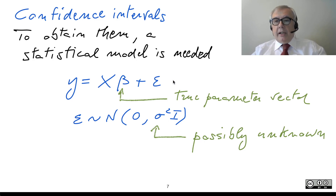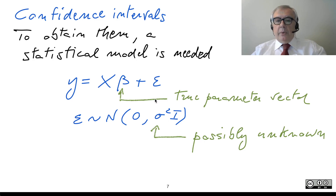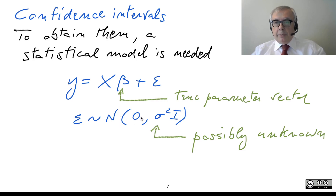There are assumptions with different degrees of completeness. We now make a strong assumption: epsilon is a vector of jointly normal random variables with zero expectation and with variance matrix sigma-square times identity.